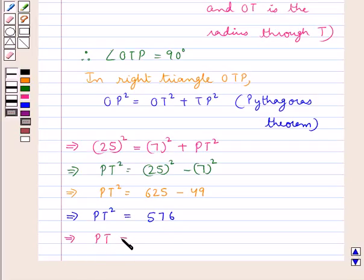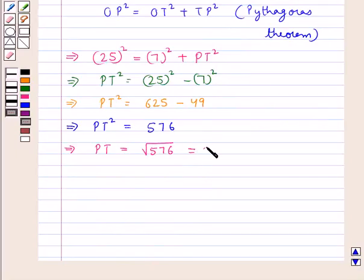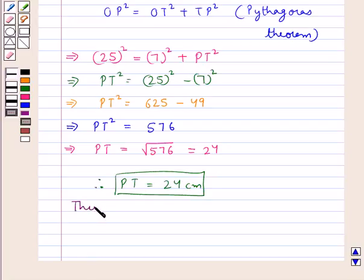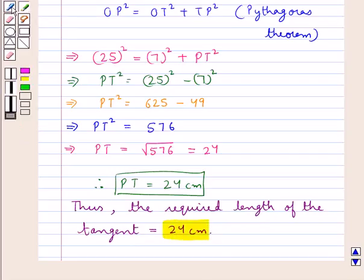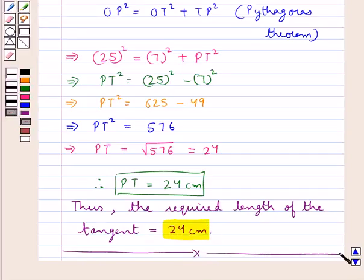So PT = √576 which is equal to 24. And thus we have PT = 24 centimeters. Thus, the required length of the tangent is equal to 24 centimeters. So this is our final answer. This completes the session. Hope you have understood the solution of this question.